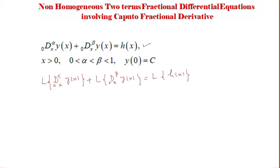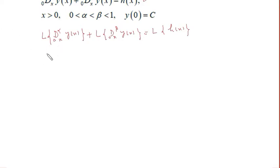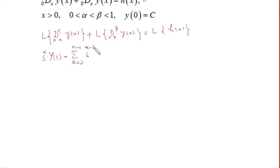Now we will apply the formula for the Laplace transform of the capital fractional derivative. Using that formula it becomes: s to the power alpha times the Laplace transform of y(x) — denoted capital Y(s) — minus the summation from k=0 to n−1 of s to the power (alpha − k − 1) times the k-th derivative of y at the point 0. This is the formula for the Laplace transform of the capital fractional derivative.